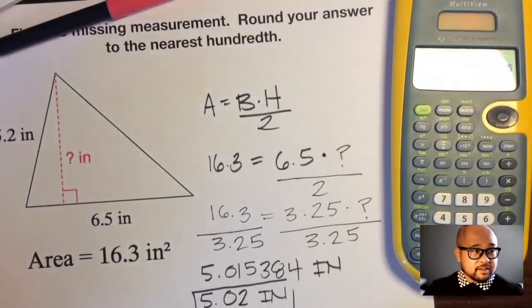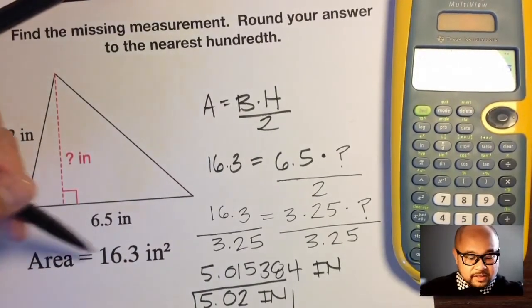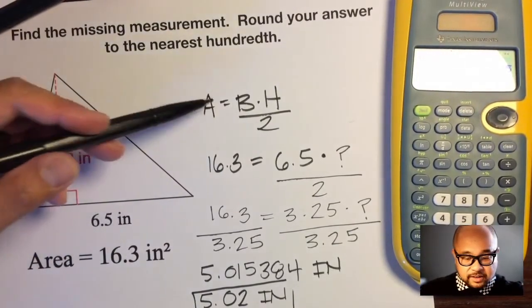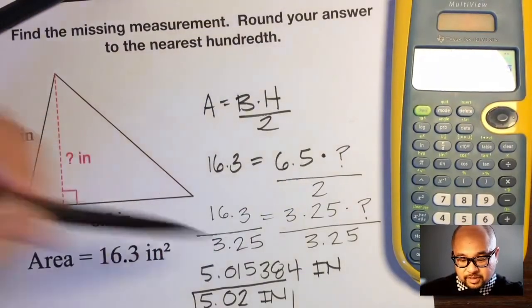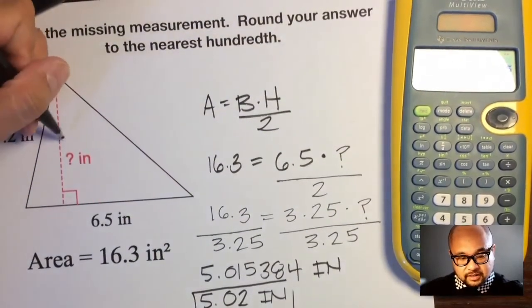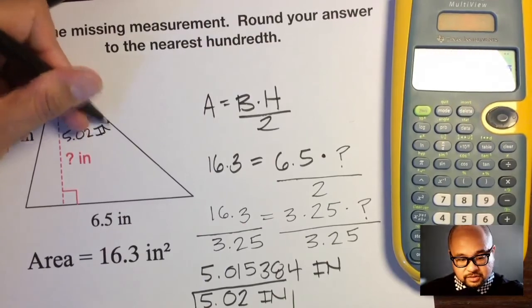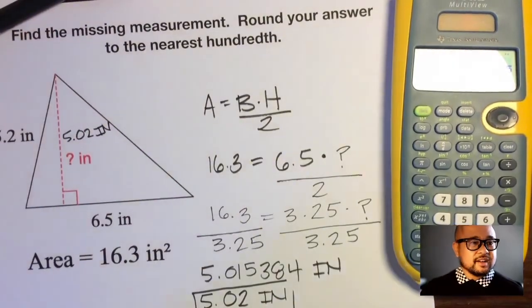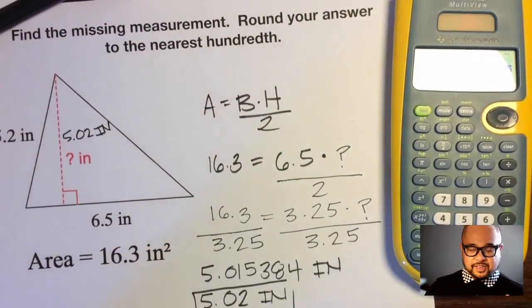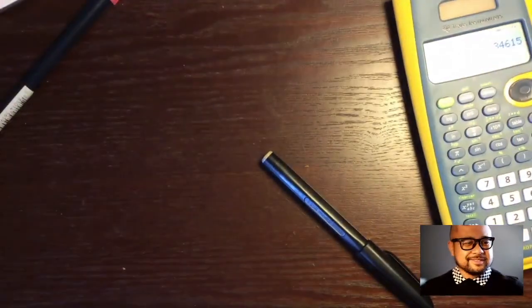That's how you use the area of a triangle formula. This time they gave us the area, we plugged everything in, did some algebra, and found the missing side is 5.02 inches. Hope this helps you get A's on everything in life.